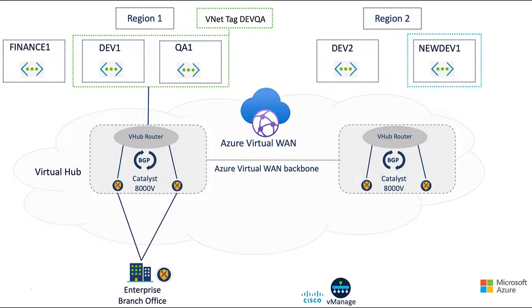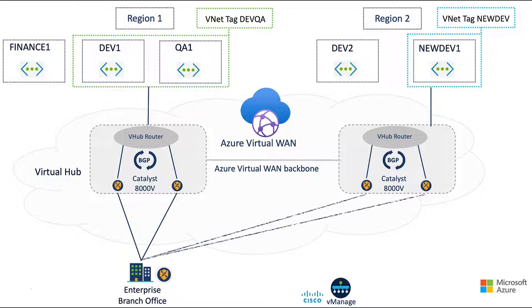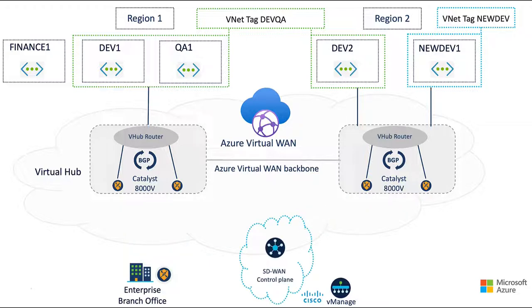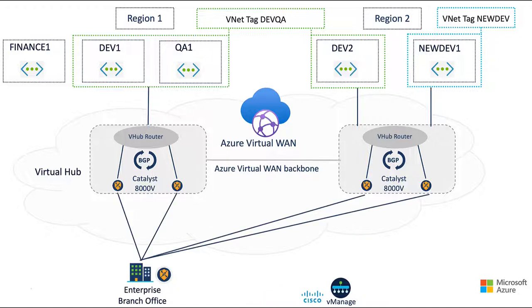We can take one or more VNets in our new region and logically group them using a VNet tag. We can declare our connectivity intent for that tag, and vManage will connect the tagged VNets to the virtual hub and to the SD-WAN fabric. We can also take one or more VNets in our new region and assign them an existing tag. Since we've already declared our connectivity intent, vManage will automatically connect the tagged VNets to the virtual hub and to the SD-WAN fabric. We can then use our separate secure SD-WAN control plane and centralized policies to control traffic flows based on customer and/or application preferences.